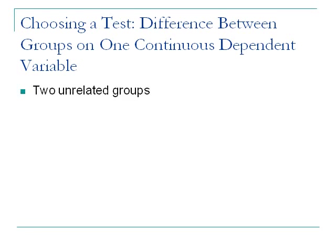Some variations: you might be looking at two unrelated groups, meaning a person's score in group A in no way influences a person's score in group B. One way that happens is if they're not the same person — it's not a pre-test/post-test design; you didn't get all levels of the independent variable. So it's a between-groups design, and you're not comparing one twin to another twin.